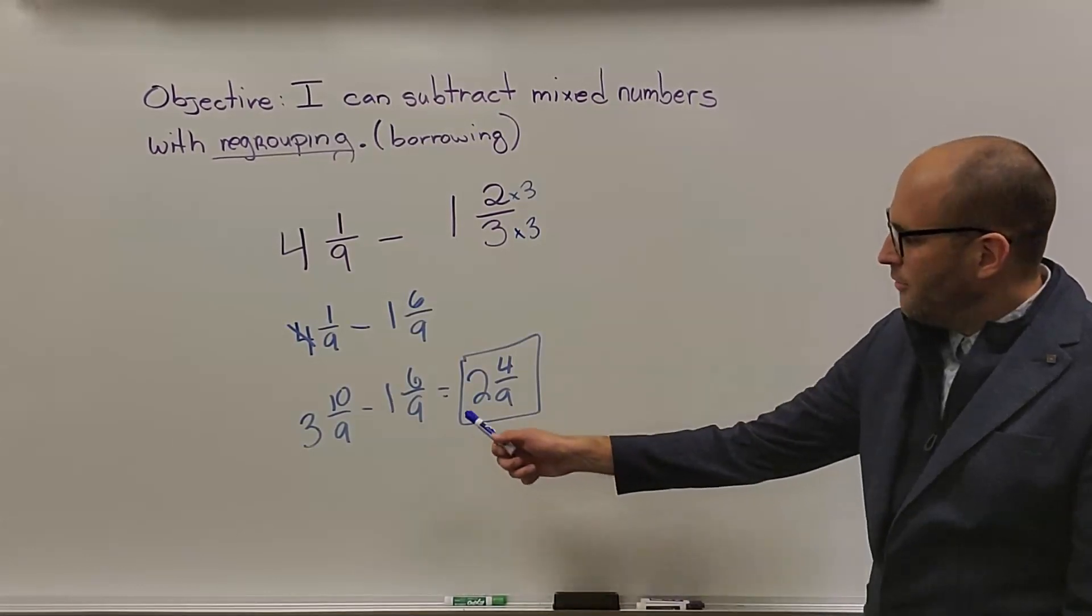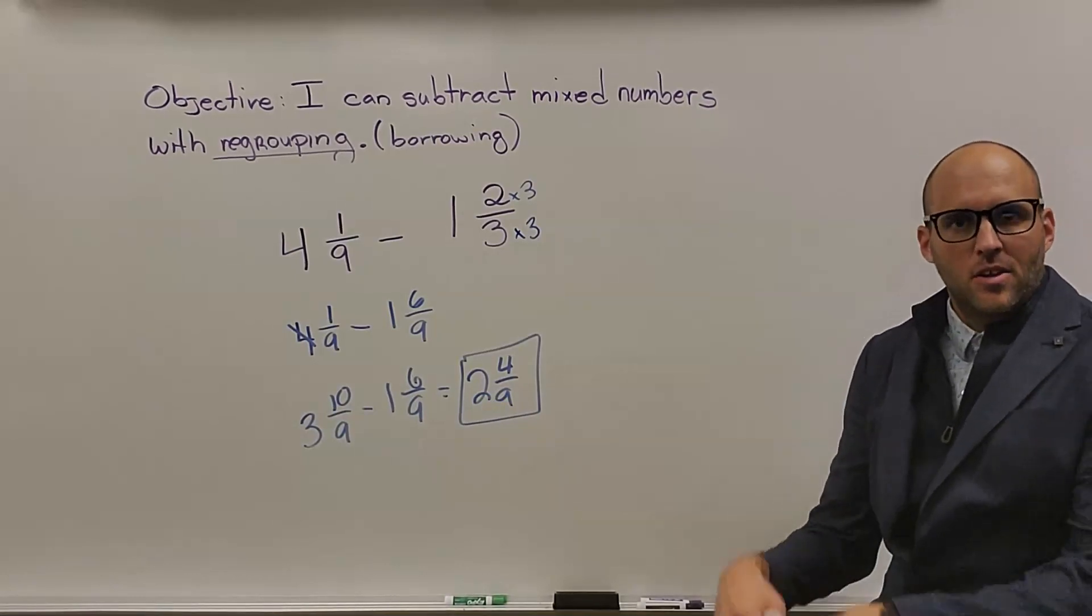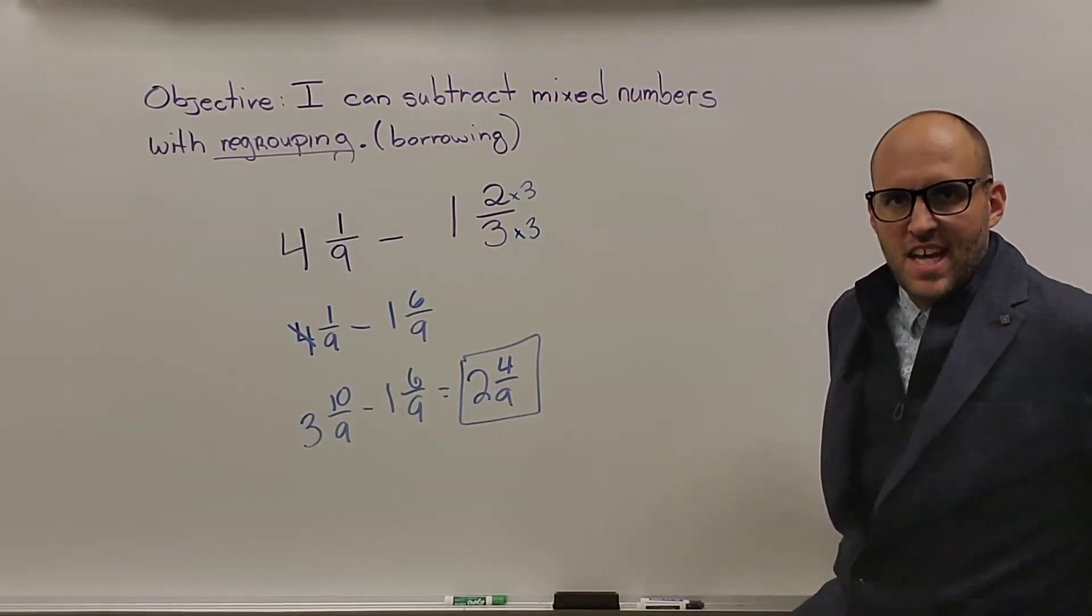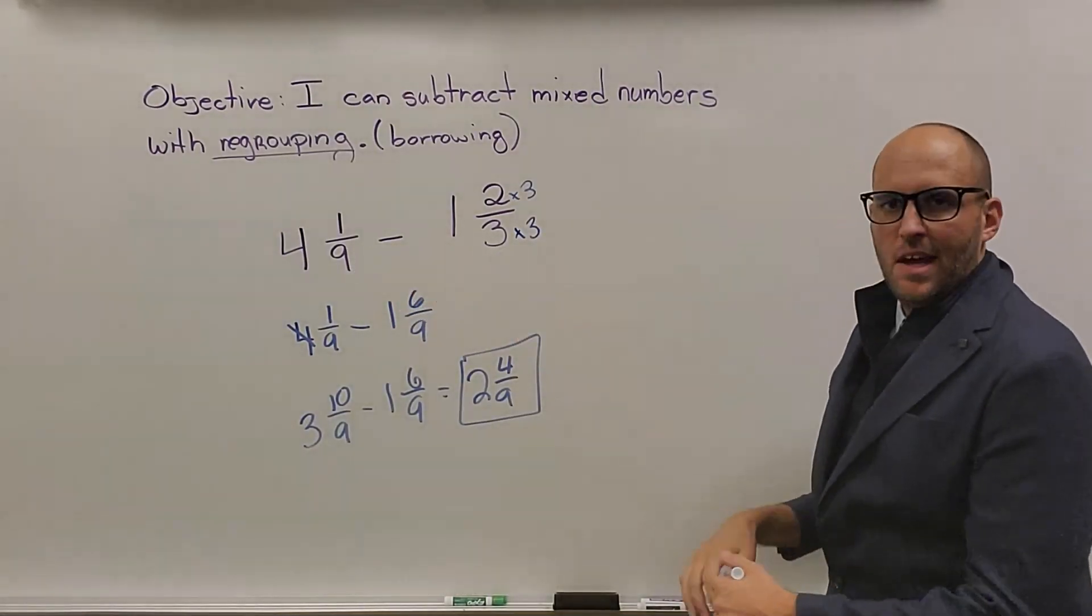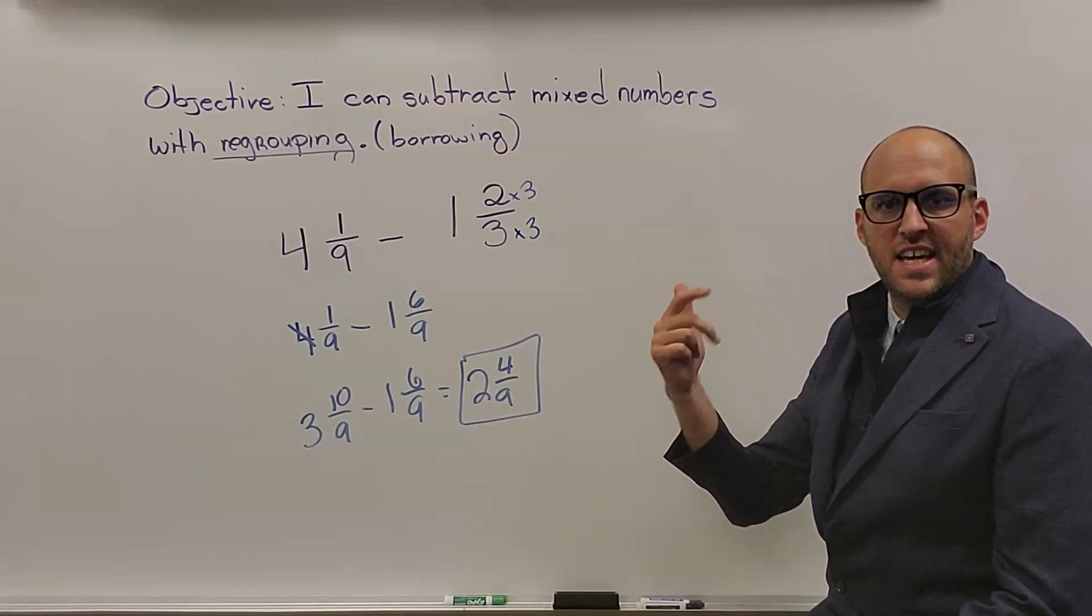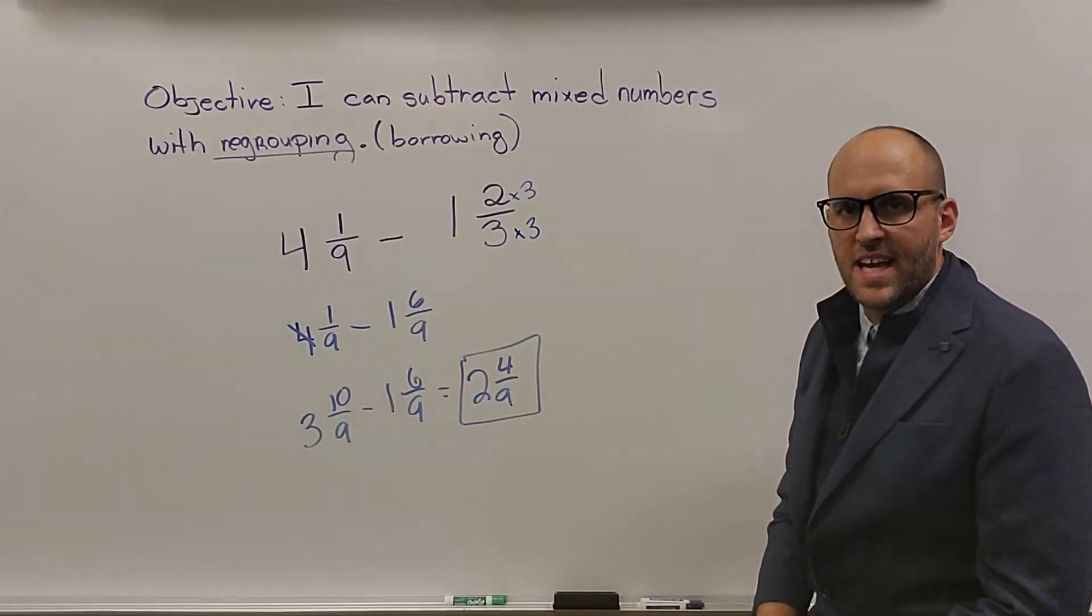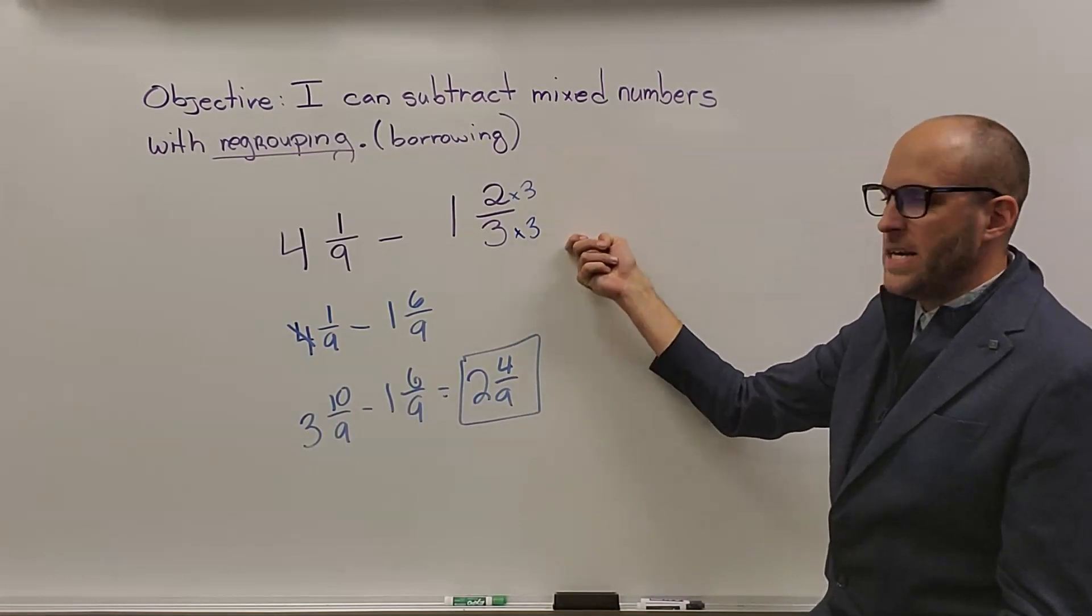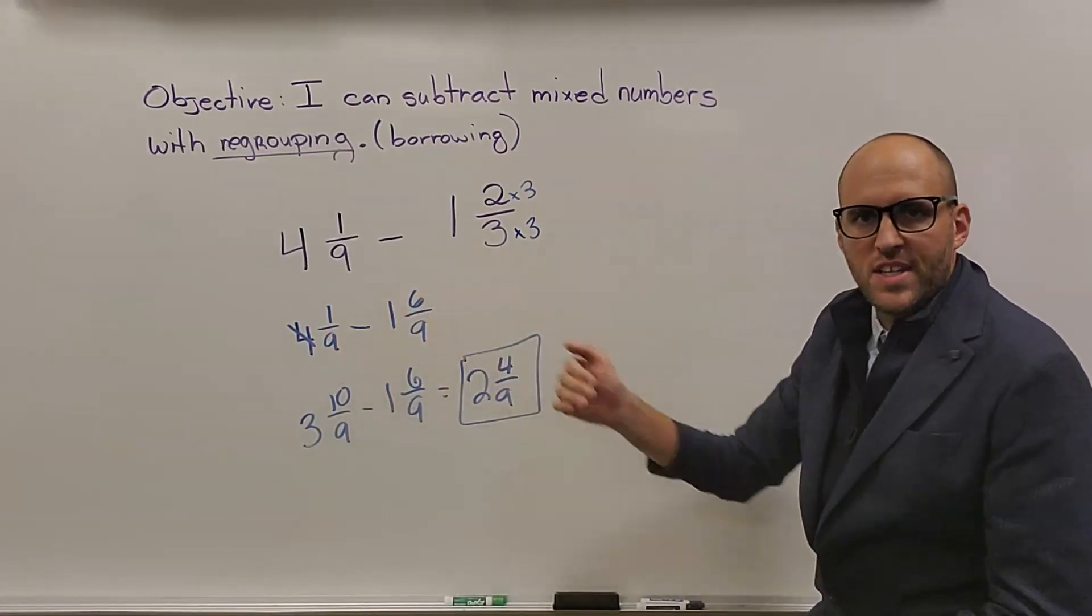All right everyone, hopefully you came up with 2 and 4 ninths for your answer. If not, hopefully when we go over this, you'll see where your mistake is. Let's take a look. So, again, 3 when we skip count to find equivalent fractions, 3, 6, 9, 9 fifths. So I can just bring my 4 and 1 ninths down, multiply my numerator and denominator here by 3. I have 4 and 1 ninths minus 1 and 6 ninths.